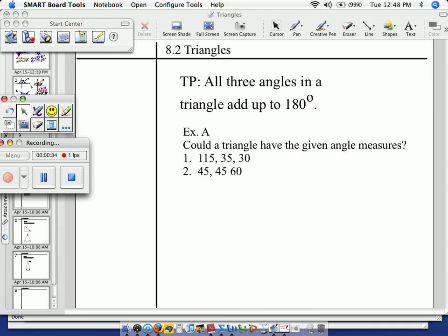So an example, a practice concept: I have triangle one and triangle two. Could a triangle have the given angle measures? One says 115, 35, and 30. How do I figure out if that's a true triangle?